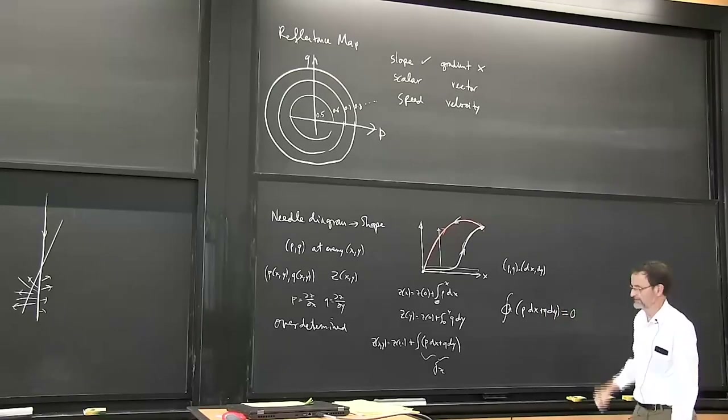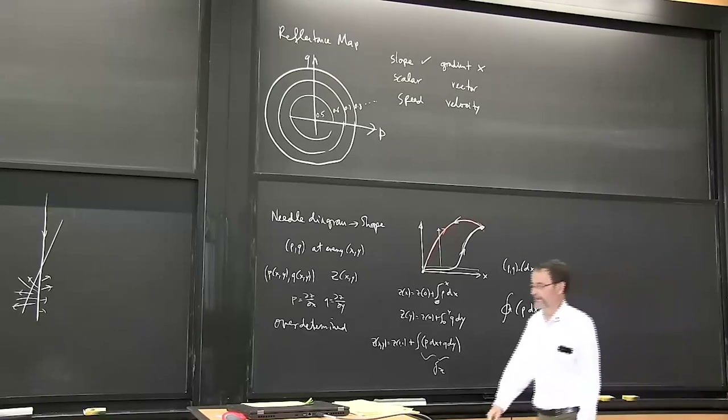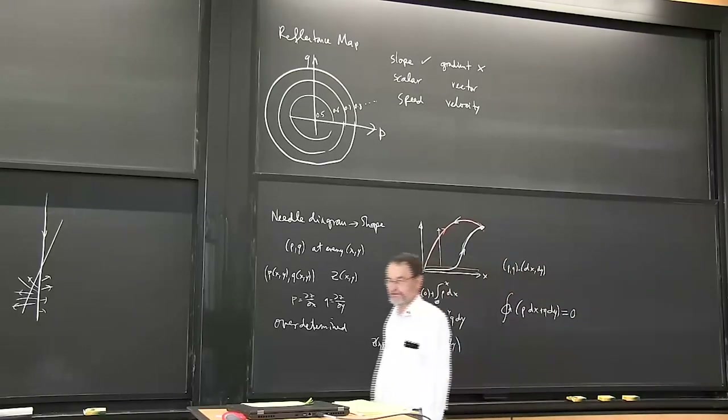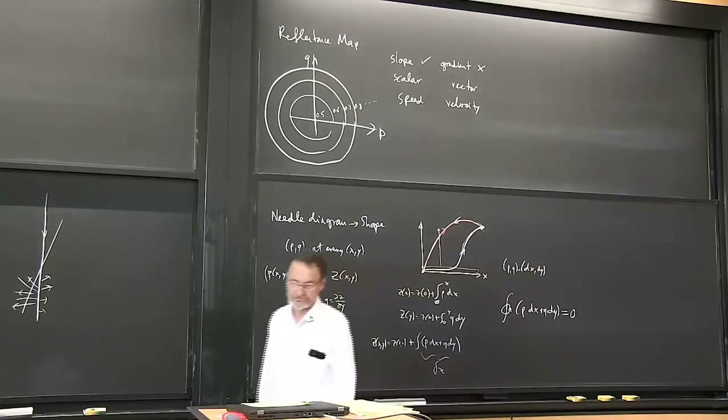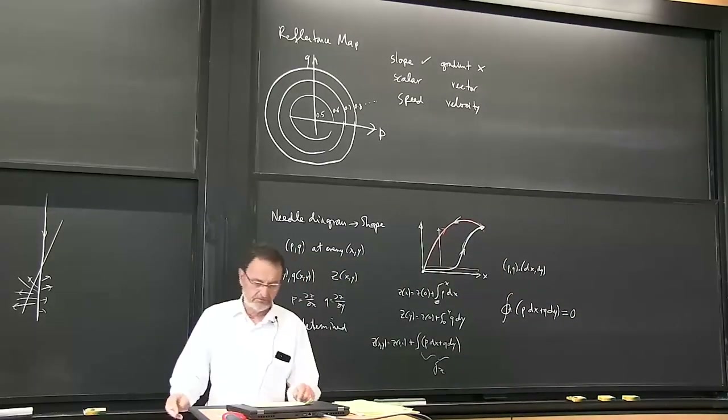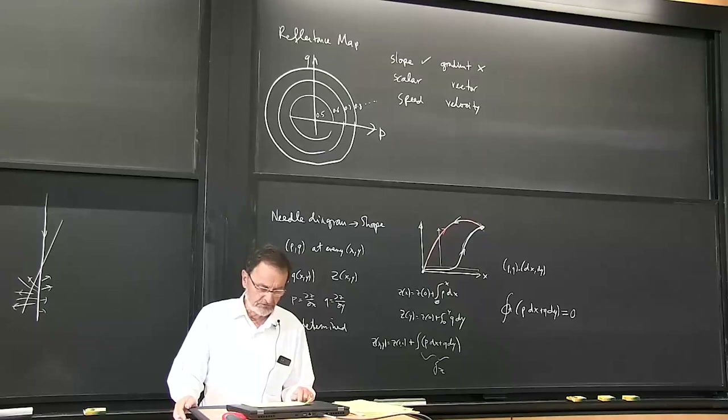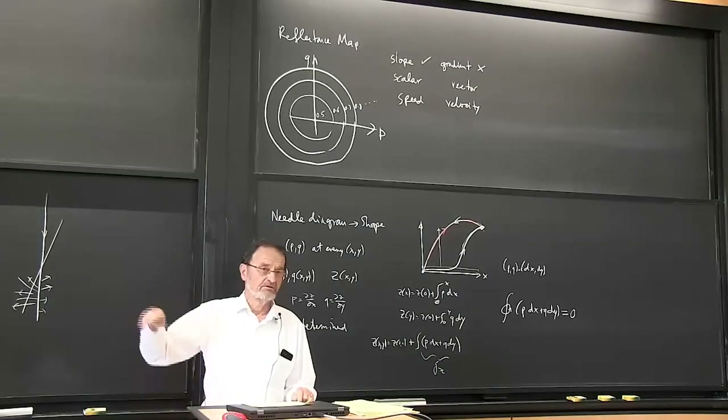If you go around the loop, the integral should be zero. Every jogger knows that's not true - if you jog in a loop, you seem to be going uphill all the way.